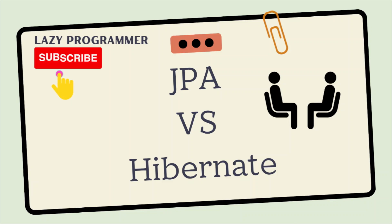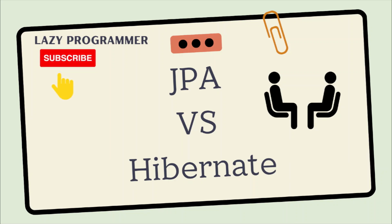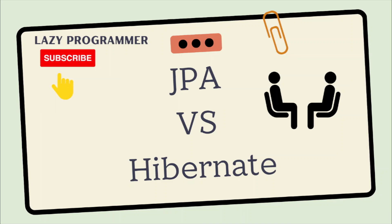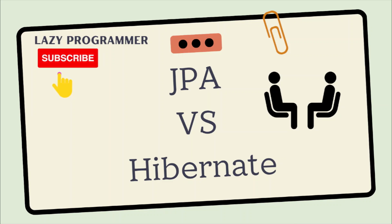JPA is a specification for accessing, persisting, and managing the data between Java objects and a relational database. It defines a set of APIs for accessing and manipulating the data stored in the database.